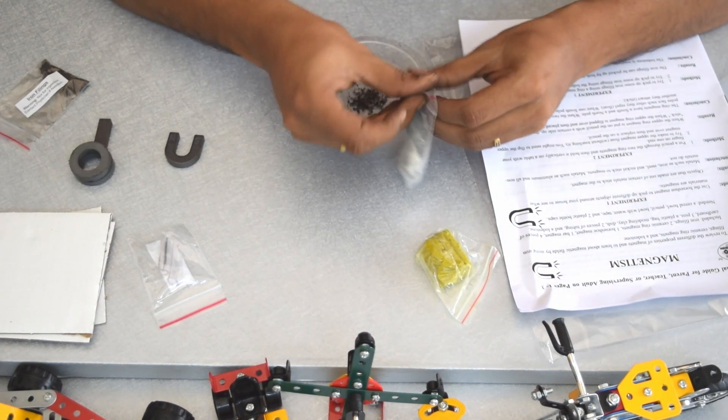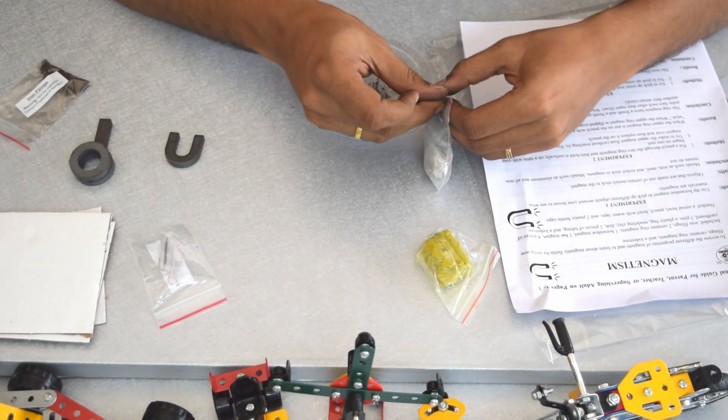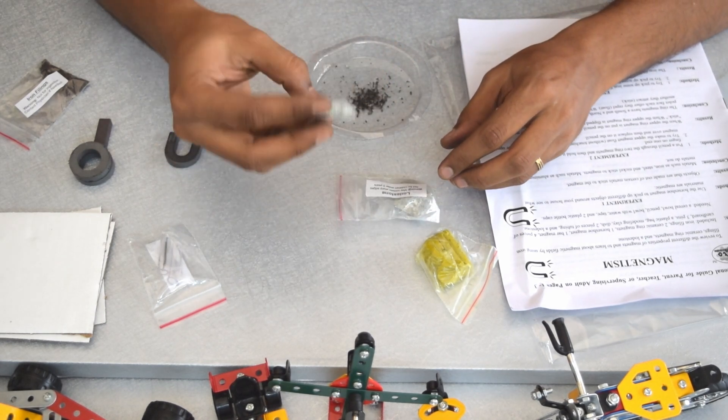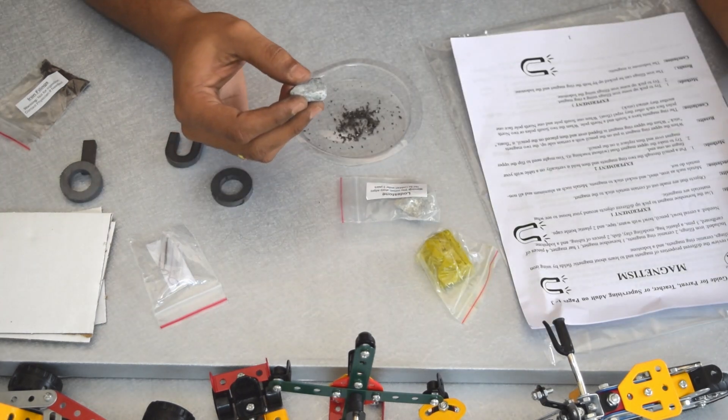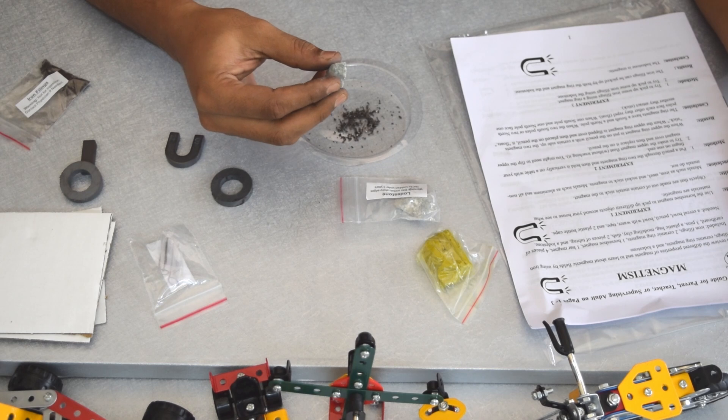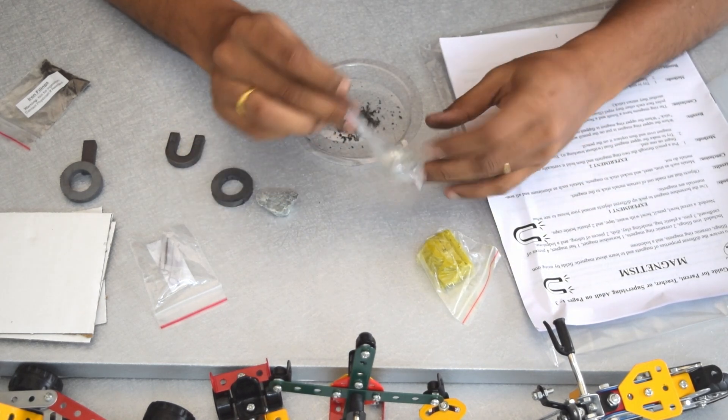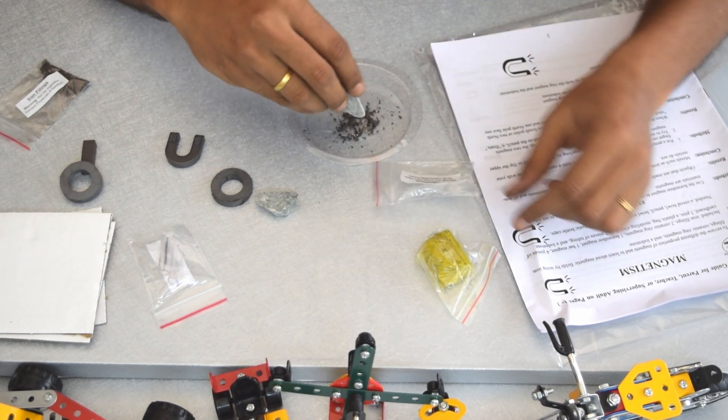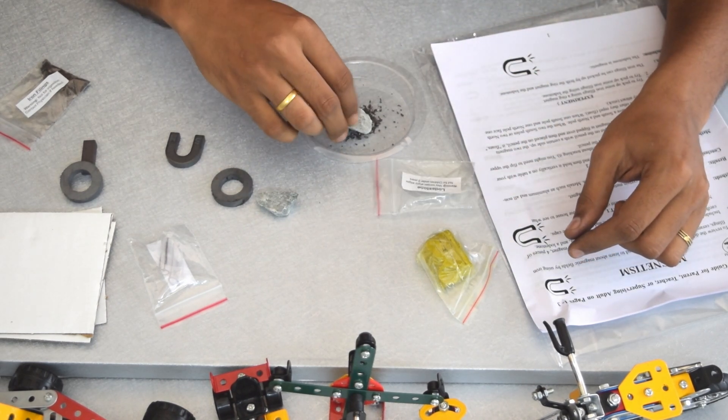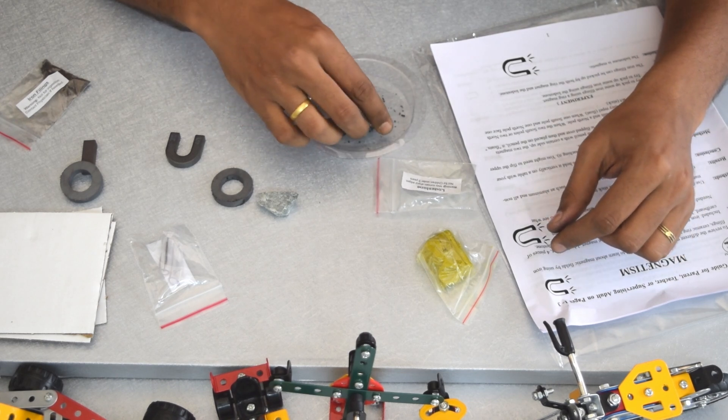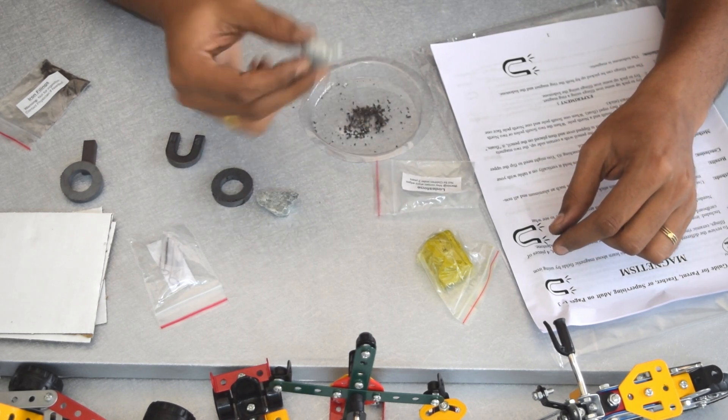Now we are going to use the lodestone. The iron filings can be picked up by both the ring magnet and the lodestone, but unfortunately I am not able to pick up any iron filings with the lodestone. See, it does not stick. I feel like there are no magnetic properties on this stone.